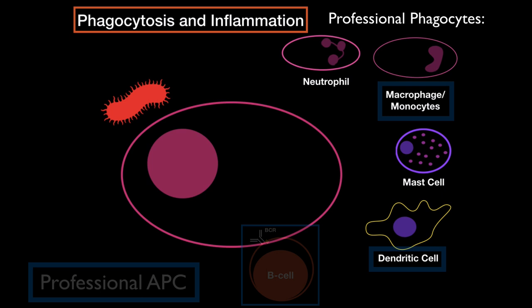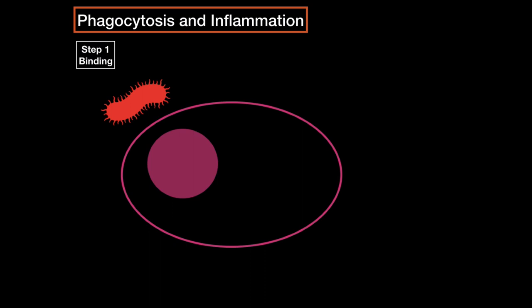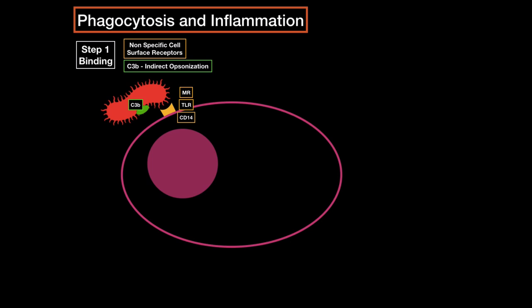Let's say this is a macrophage, for example. The first step of phagocytosis is binding — we need to bind to the cell. There are three ways we can do that. It can bind directly to the cell using nonspecific cell surface receptors, like mannose receptors, which bind to the sugar monomer mannose found on cell walls of microorganisms and fungi. It can also bind through a variety of toll-like receptors on the surface of the phagocyte, or through CD14, which is more or less a co-receptor with the toll-like receptor that binds lipopolysaccharide of gram-negative bacteria.